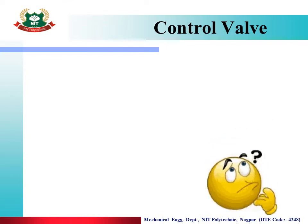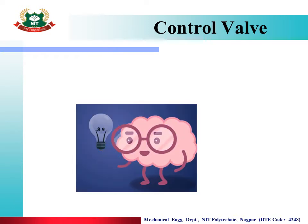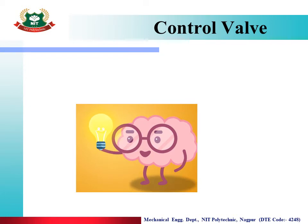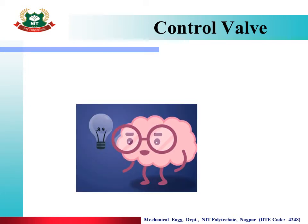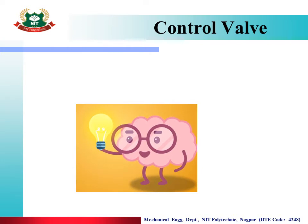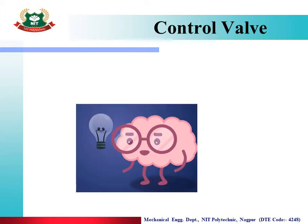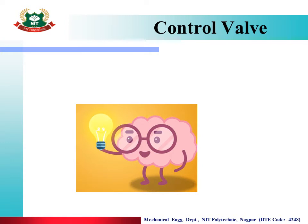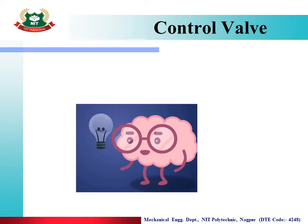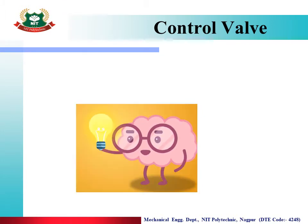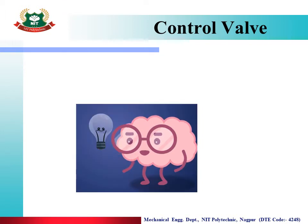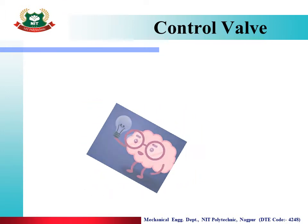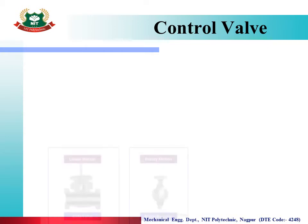What is control? Our brain is the control device for our body — it controls every movement of our legs, hands, nose, and body. Similarly, in hydraulic and pneumatic systems, control valves regulate and direct the system, just as the brain controls body movement.